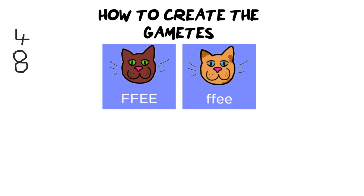There are two laws that govern gamete formation. The first is independent assortment — you inherit fur color and eye color separately, with no influence on one another. The second is the law of segregation, which means you are only allowed to inherit one of each type of allele. None of your gametes should have two letter Fs or two letter Es in them.